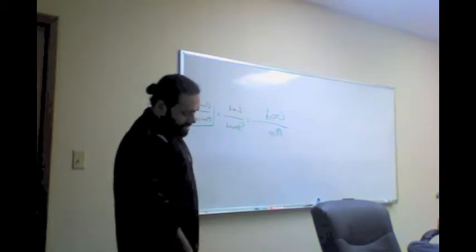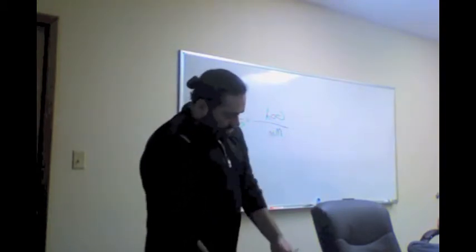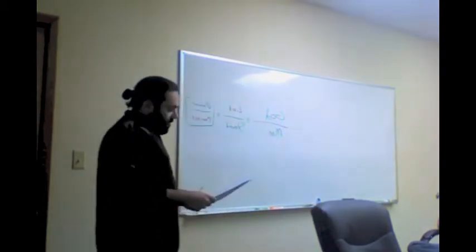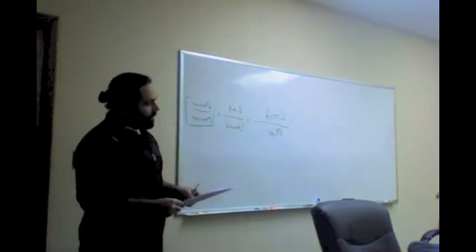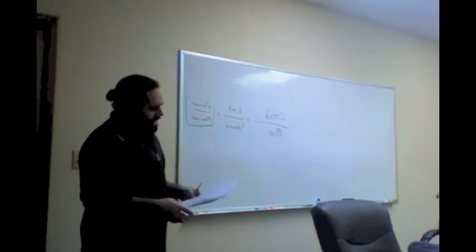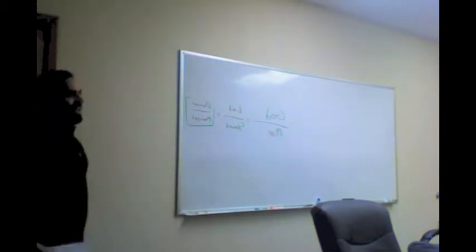So the third verse I've got is Ecclesiastes 4:9 and 10. It says, Two are better than one because they have a good return for their labor. If either of them fall down, one can help the other up. That's another thing that I kind of see through the group.